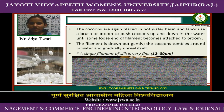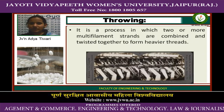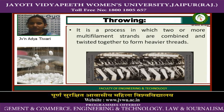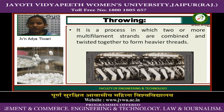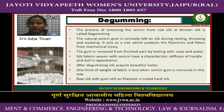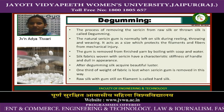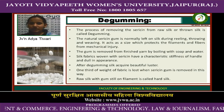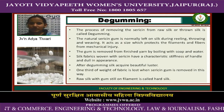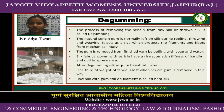A single filament of silk is very fine, 12 to 30 micrometers. Throwing is the process in which two or more multiple strands are combined and twisted together to form heavier threads. Degumming is the process of removing sericin from raw silk or thrown silk. The natural sericin gum is normally left on silk during reeling, throwing, and weaving.